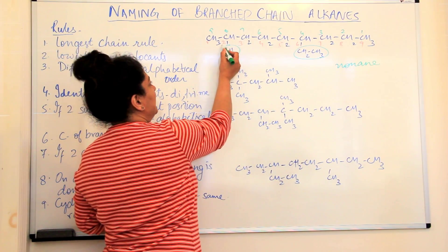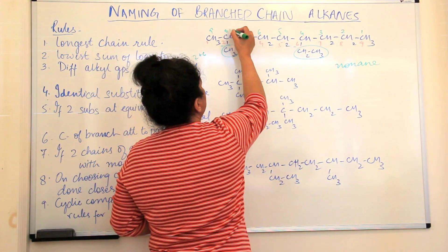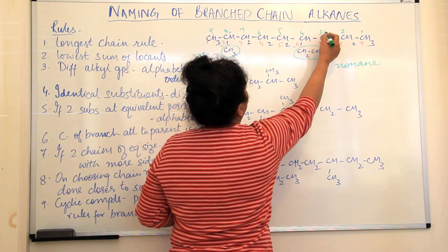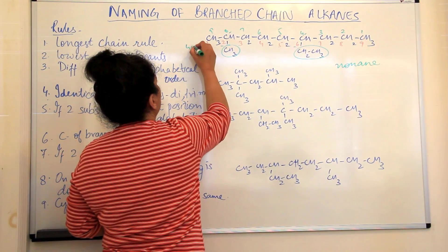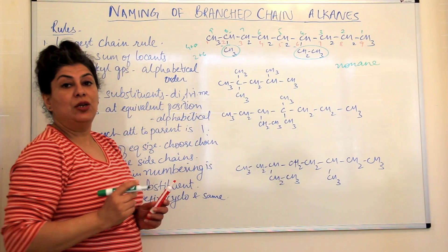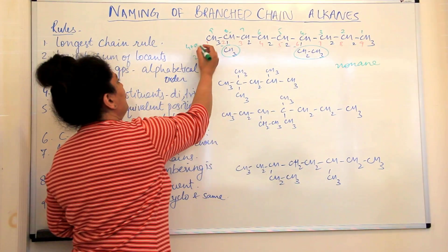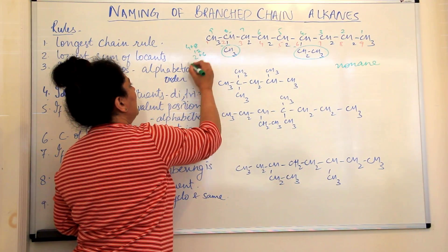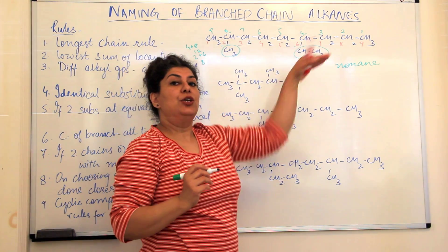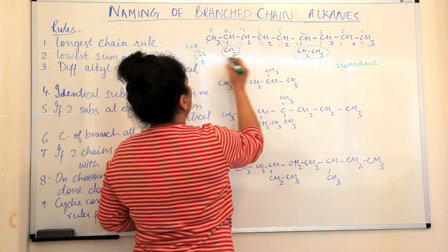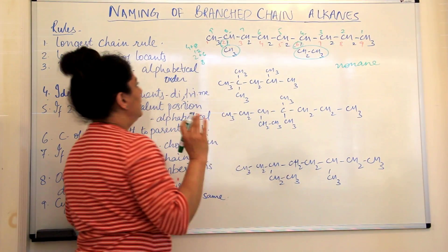The locants from one side are 2 and 6, so 2 plus 6 equals 8. From the other side they are 4 and 8, so 4 plus 8 equals 12. Obviously 2 plus 6 gives the lower sum of locants. Counting from this side gives 4 plus 8 equals 12, while 2 plus 6 equals 8. Hence, this direction gives the lowest sum of locants, and so locants 2 and 6 are to be taken.